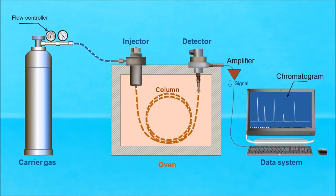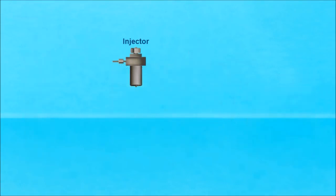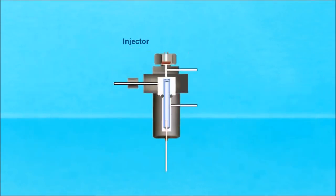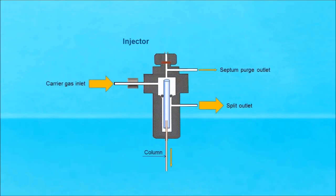We will talk about each part separately. First, the injector. As we can see, the injector has an inlet for the carrier gas on the left and a split outlet, or split vent, on the right.